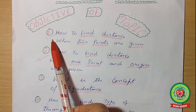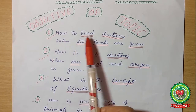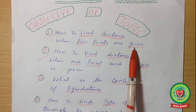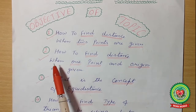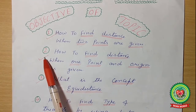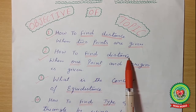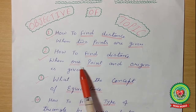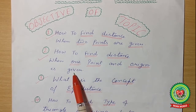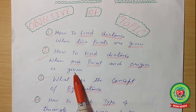Number one: how to find distance when two points are given — this we have done in our first lecture. Number two: how to find distance when one point and the origin is given — this we have done in our second lecture.